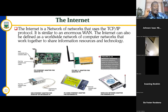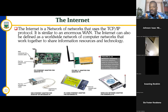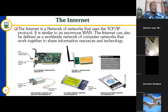Any device that has the capability of being connected to a network is a network device. When we talk of a node, a node is a device that is connected to a network. So once that particular device is connected to a network, it's a node. For instance, my laptop is connected to a network, so my laptop serves as a node on the network. My printer is currently not connected to a network, but if it has the capability to be connected, then my printer is a network device. That is the difference.